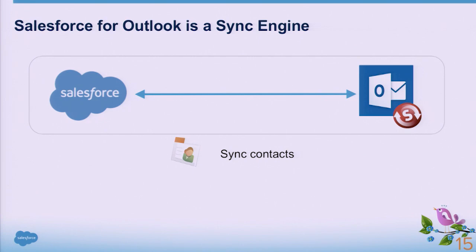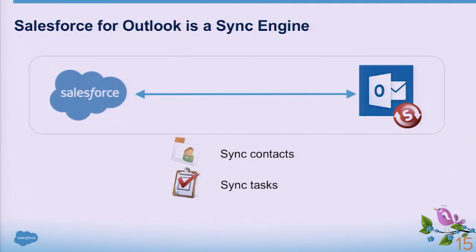They are spending a lot of time in two applications. The business solution that Salesforce for Outlook brings is an integration between those two applications, using two modules that are completely independent from one another. The first one is a synchronization engine that will bring your contacts from Salesforce into Outlook, or the other way around. If you're using Outlook to manage your contact information, you can share that information with the rest of your organization in Salesforce. It also synchronizes tasks and calendar events.